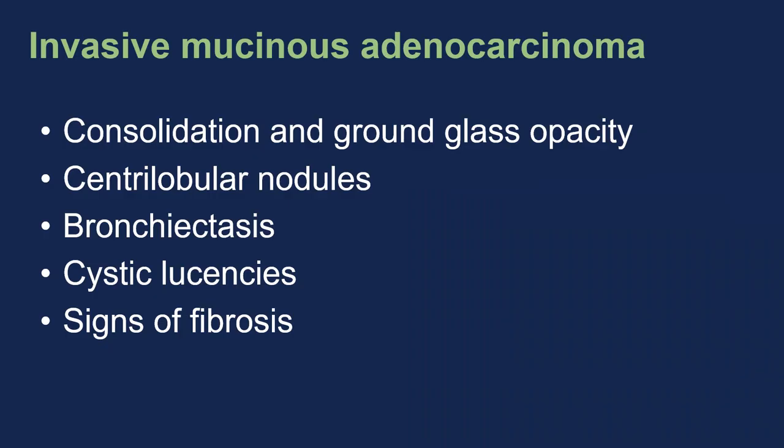In summary, the unique imaging features of invasive mucinous adenocarcinoma are things that mimic pneumonia, other acute alveolar processes, or interstitial lung disease: consolidation, ground glass, centrilobular nodules, bronchiectasis, cystic lucencies of varying morphologies, and occasionally even signs of fibrosis.